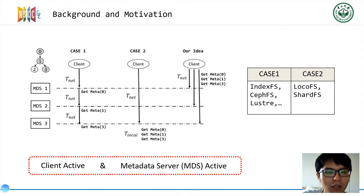Case 2 lets a single metadata server execute path resolution, but also needs to resolve the path locally. This way can reduce network overhead but causes other problems. Our idea is to still use the client active method to retain scalability and reduce network overhead by overlapping the network I/O in path resolution.